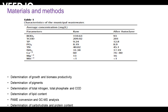In the analytical procedure, the growth of biomass productivity, pigment, total nitrogen, orthophosphate and CO2, lipid compounds content, GC-MS analysis, FAME conversion, and carbohydrate and protein content are analyzed.